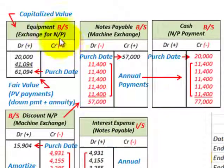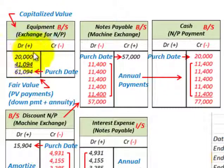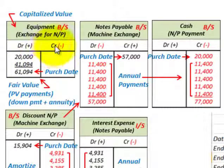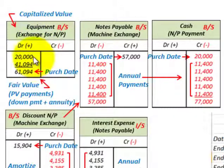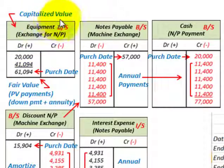This is how we handle an equipment contract treated as a notes payable with an annuity. The capitalized value on the equipment is the cash down payment plus the present value of all future payments. Note that if there are any installation charges or other costs associated with the machine, those would also need to be included in the capitalized amount. This example covers the basic method for determining the capitalized value.